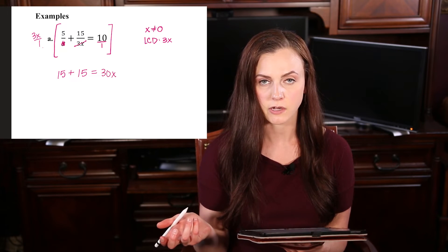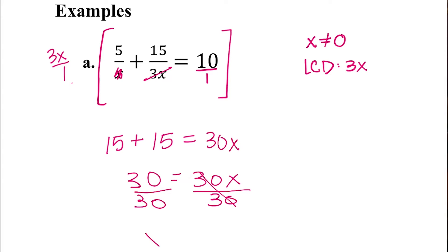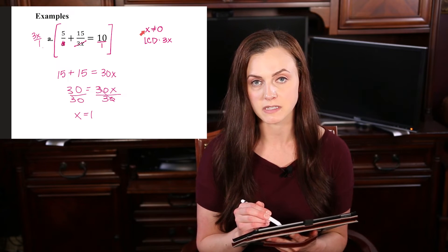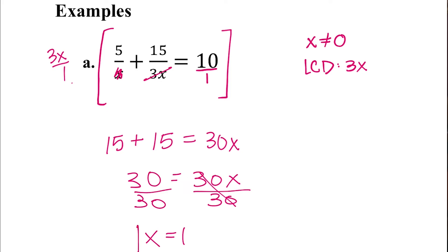So now we just have a linear equation to solve. 15 plus 15 is 30, and that's equal to 30x. So to get x by itself we'll divide by 30, and we get that x is equal to 1. If I compare this against my restrictions, we are totally fine, because our only restriction was that x couldn't be 0, and we didn't get 0, we got 1, so that is our solution.